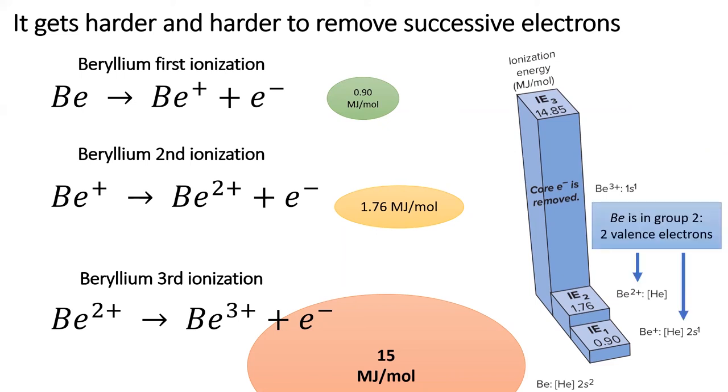Group two elements have two valence electrons situated in the outermost energy level for beryllium. That's the 2s level. Elements lose their valence electrons relatively easily compared to losing their inner electrons.